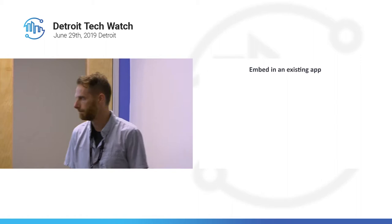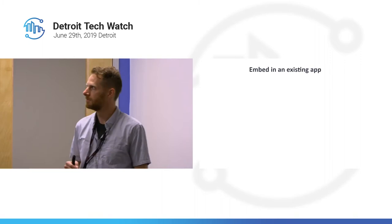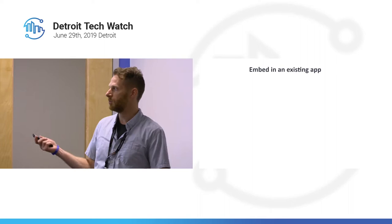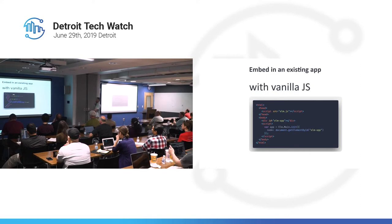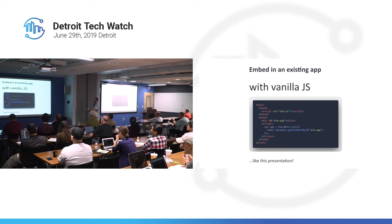For getting started with Elm — particularly if you're trying to introduce it at work — I recommend embedding into an existing app. At every company that I've used Elm, this is what has worked. You can do this with vanilla JavaScript, it's just a couple lines of code. This is what you might have in your HTML file with your compiled output Elm code right here, and then you have the element that you want your Elm application to run in — you could have other things on your page. And then there's this little line which bootstraps the app, and that's it. This is what I did for this presentation, so this is actually written in Elm, and my HTML markup looks almost exactly like that.